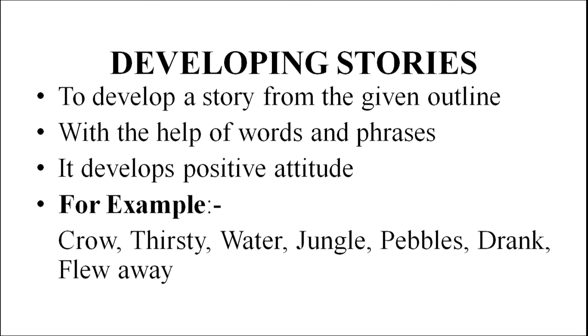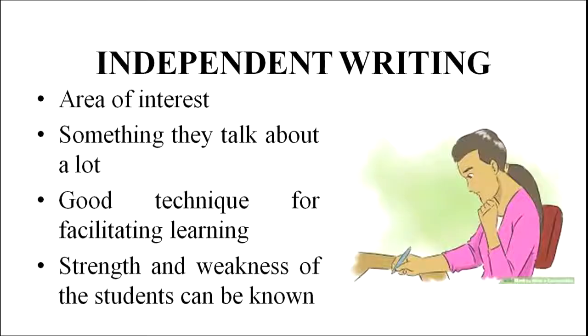The second technique is developing stories, where a teacher gives a few important words to the students. For example, for the thirsty crow story in elementary classes, we give words like: crow, thirsty, water, jungle, pebbles, drank, flew away — and students have to develop the story from this outline. The main aim is to develop a positive attitude; students learn how to join sentences, develop grammatical rules, understand conjunctions, and how to make a proper, meaningful sentence in correct sequence.